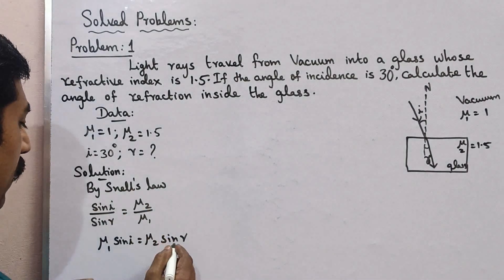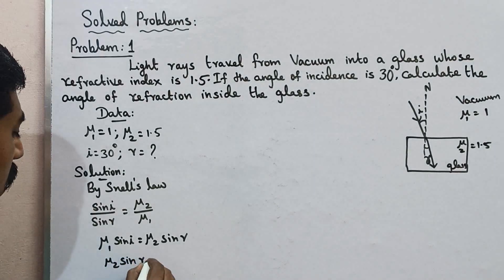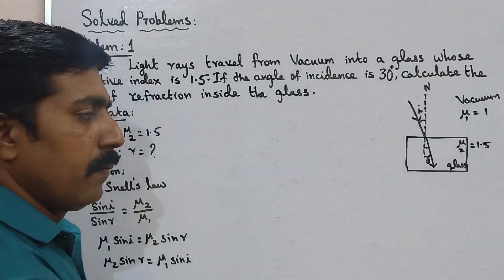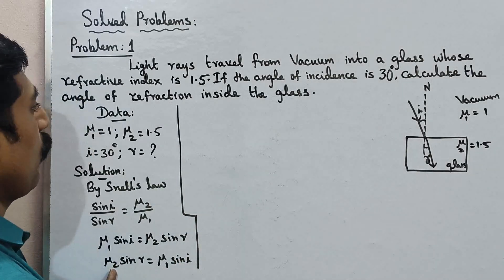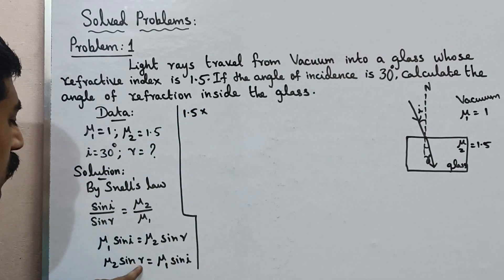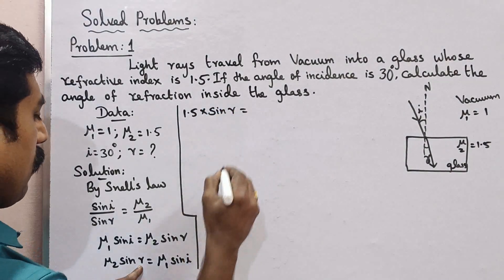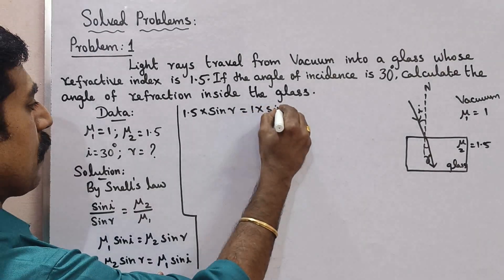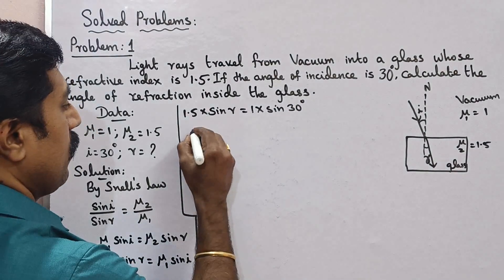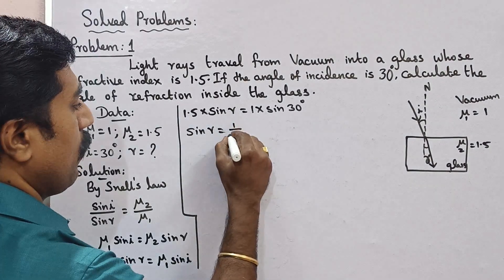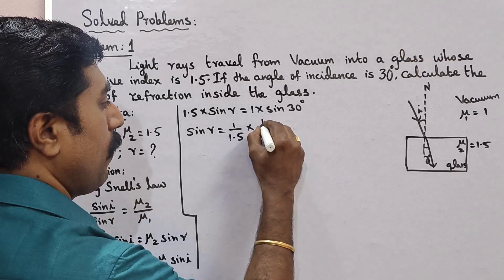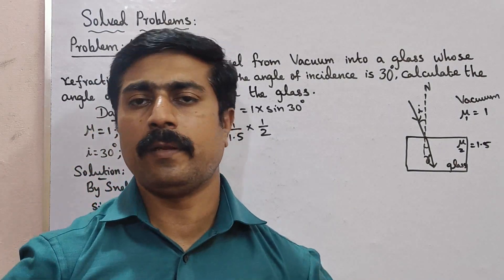By Snell's law: sin i / sin r = mu2 / mu1. The ratio of sin of the angle of incidence to sin of the angle of refraction equals the ratio of the refractive index of the second medium to that of the first medium. Rearranging: mu1 × sin i = mu2 × sin r.